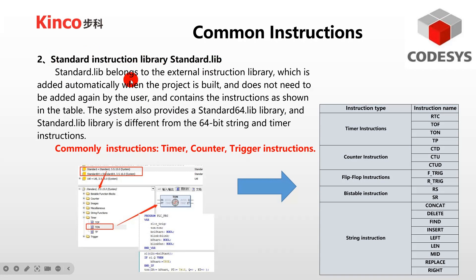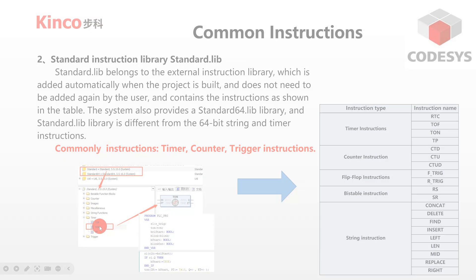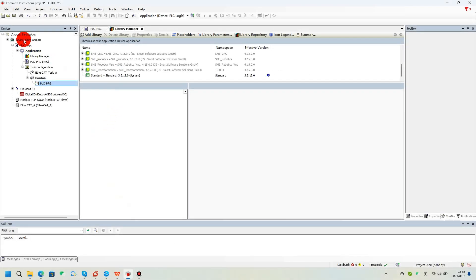The standard instruction library is an external instruction library which is automatically added when the project is created, so the user does not need to add it again. The system also provides a standard 64-bit library, which is different from the 64-bit string and timer instructions. The common instructions include timer, counter, and trigger instructions.